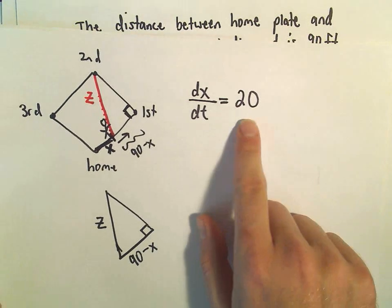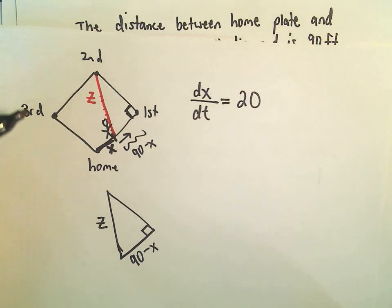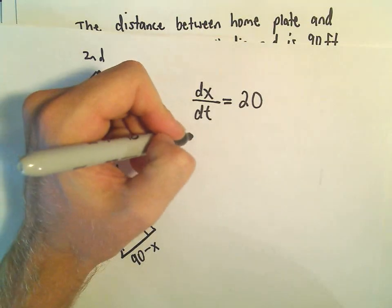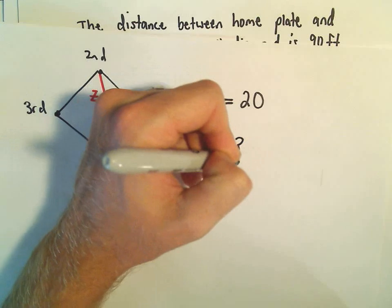So we're given dx/dt, we're trying to find the rate of change between the person and second base. So we want to know the value for dz/dt.